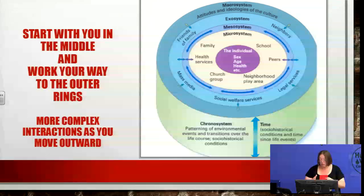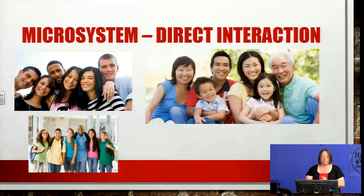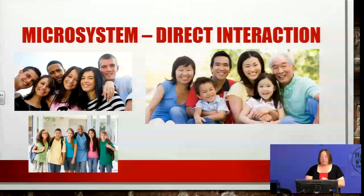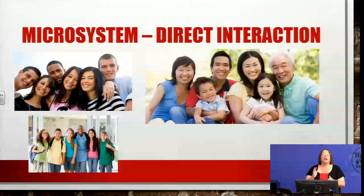We'll start right away with the microsystem. In the microsystem, this is where you have regular interaction with other people. It can be similar to the picture on the top left, which is a person with a bunch of friends. It can be the picture on the right, which is family. It can even be the picture on the bottom left — the people that you go to school with. So where do you have regular interaction with people? That's a microsystem.